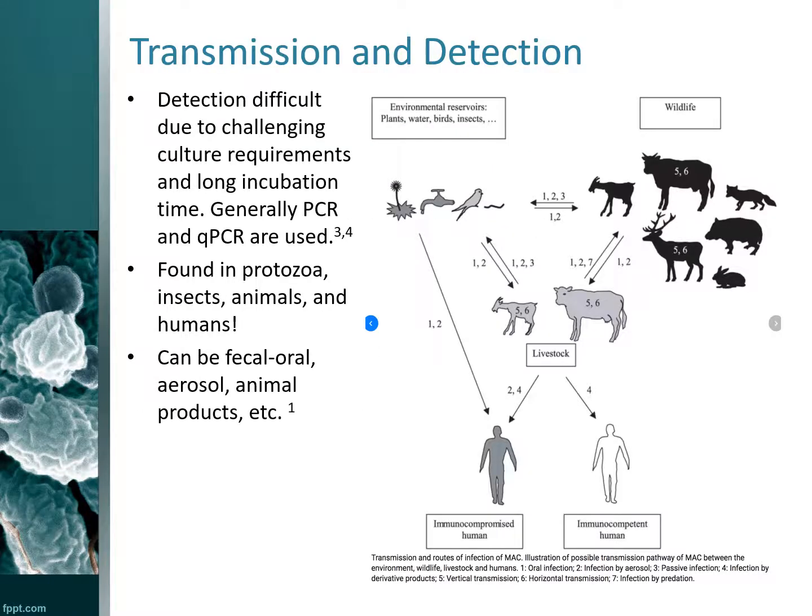The detection routes can be seen in the figure presented. For humans, notable ones are oral, aerosol, and from animal byproducts. Detection is incredibly difficult — it's challenging to culture and there are enormous 12 to 16 week incubation periods. Normally we need some sort of molecular methods such as gene sequencing, so PCR and qPCR are often used.